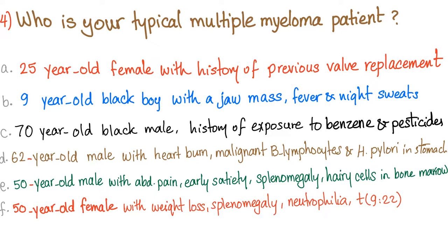The correct answer is C — the 70-year-old. Multiple myeloma is more common in males than females, more common in African-American patients, and there is a history of exposure to benzene or pesticides. It's not A, of course.